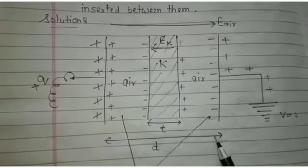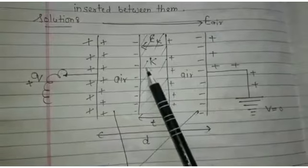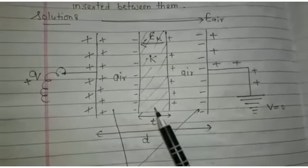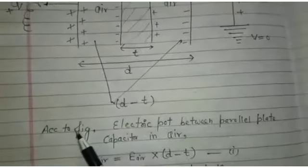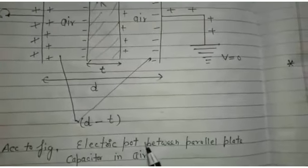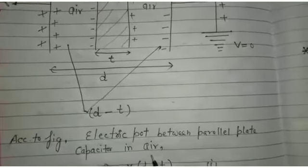The thickness of two plates is small d. The thickness of dielectric medium is small t. The thickness of air d minus t. First we calculate for a given figure electric potential between parallel plate capacitor in air.